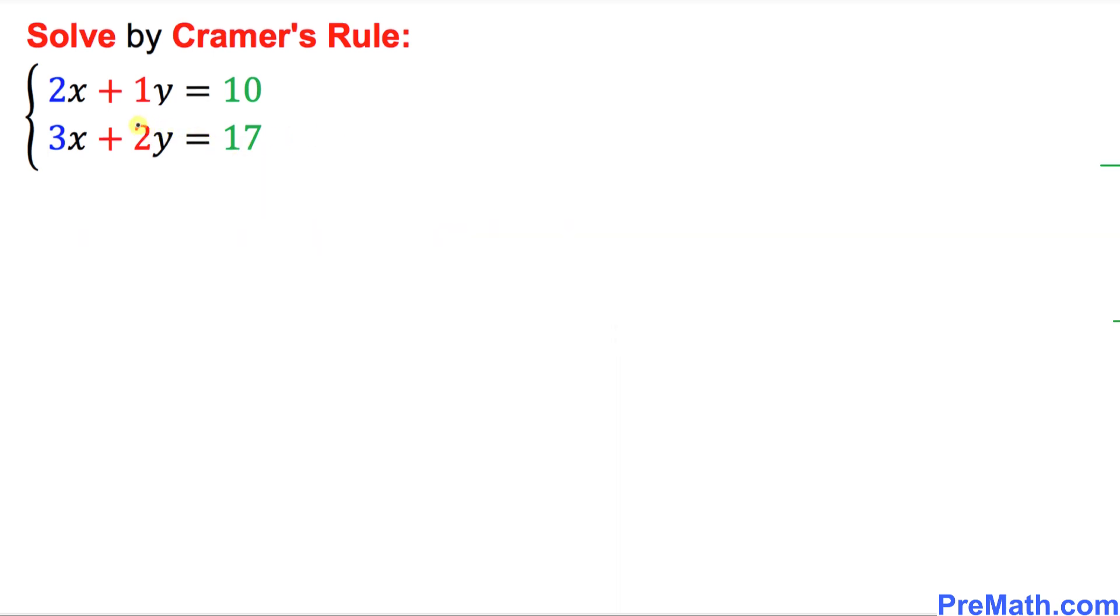Now we want to solve this system of equations. That means solving a system of equations means that we want to find x value and we also want a y value. So here I have nicely set up x equal to this big box on the top and the big box at the bottom. And by the way, this big box, the vertical bars are called, as I told you a few minutes ago, it is called determinants. Likewise, y equal to top determinant divided by bottom determinant.